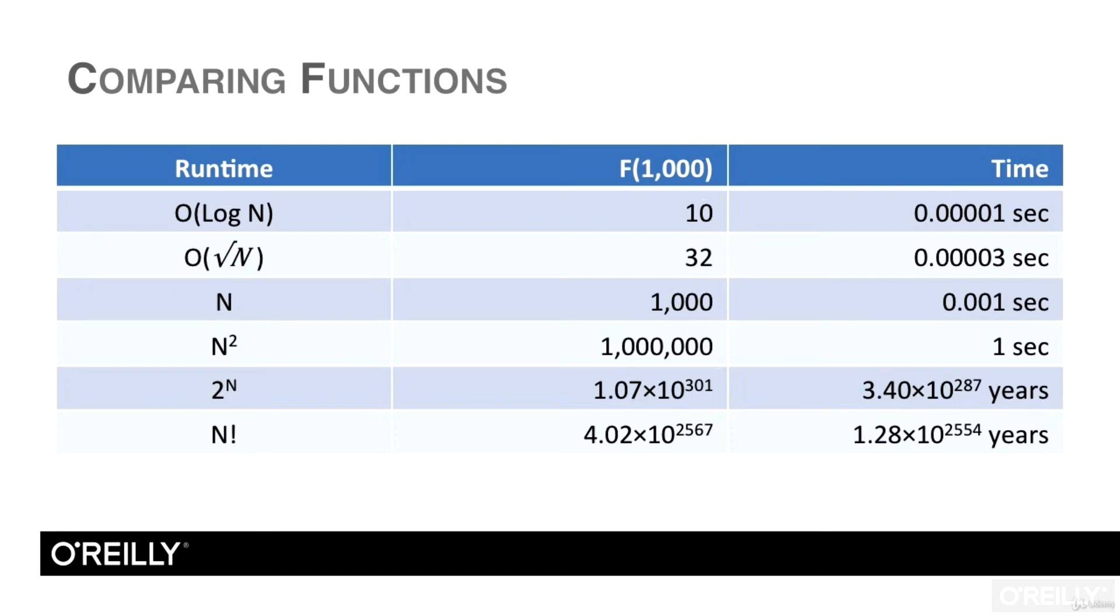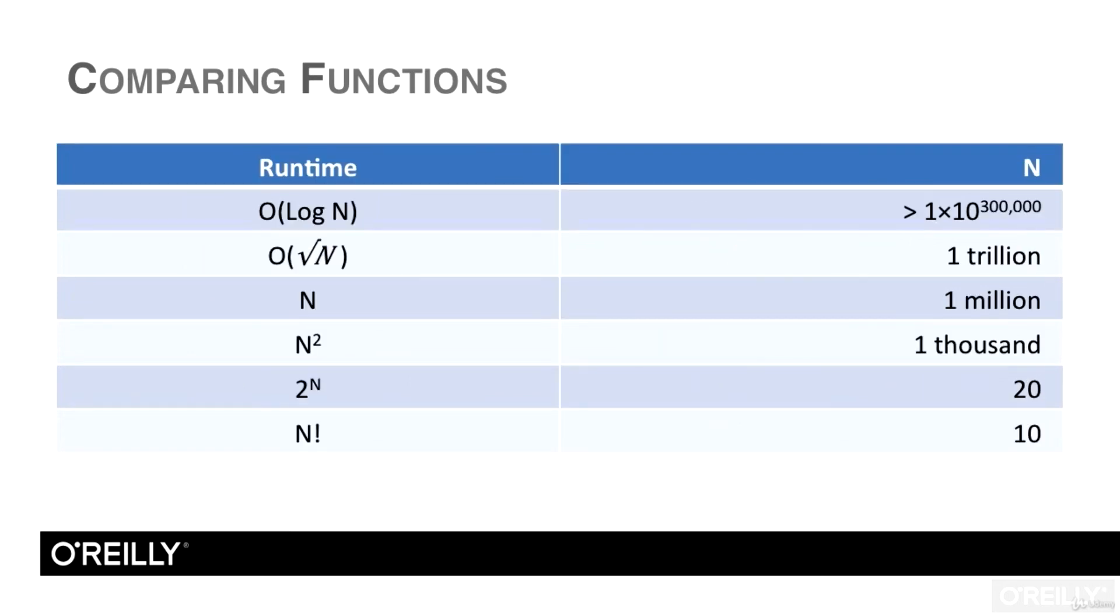The final way I want to compare these functions is to turn the problem around and ask how large a problem the different algorithms could solve in one second on our computer that can execute 1 million steps per second. This table shows the results. In one second, the algorithm with order log n performance can handle extremely large problems, with n as large as 1 times 10 to the 300,000th power.